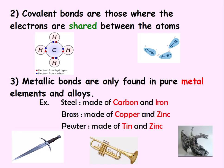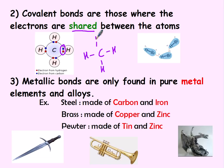Covalent bonds are those where the electrons are going to be shared between atoms. Here in the picture we can see that carbon and hydrogen are sharing electrons. We drew Lewis structures throughout this unit, representing them with lines being the electrons being shared.